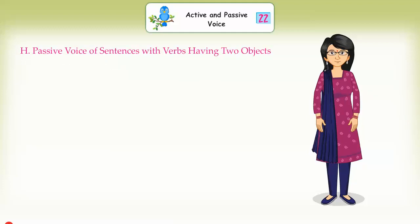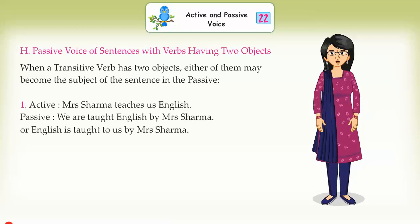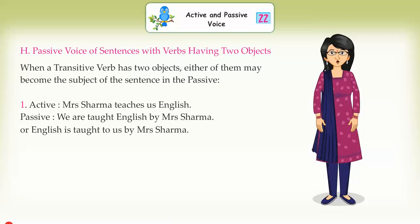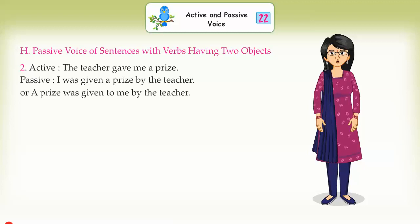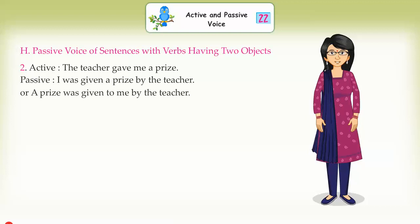Passive voice of sentences with verbs having two objects. When a transitive verb has two objects, either of them may become the subject of the sentence in the passive. Active: 'Mrs. Sharma teaches us English.' Passive: 'We are taught English by Mrs. Sharma,' or 'English is taught to us by Mrs. Sharma.' Active: 'The teacher gave me a prize.' Passive: 'I was given a prize by the teacher,' or 'A prize was given to me by the teacher.'